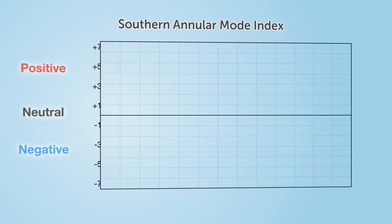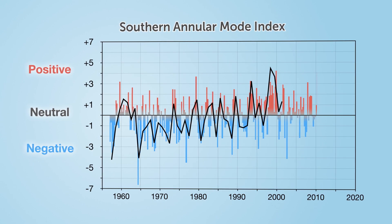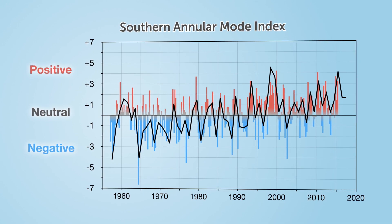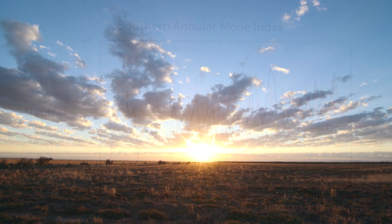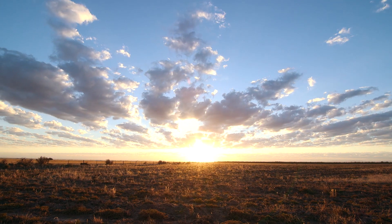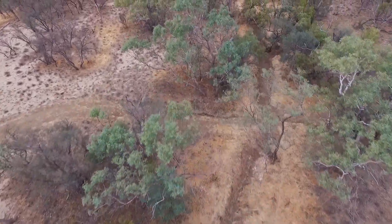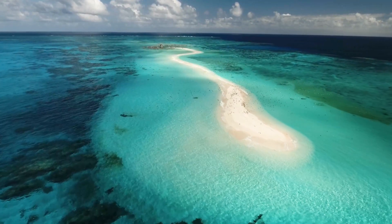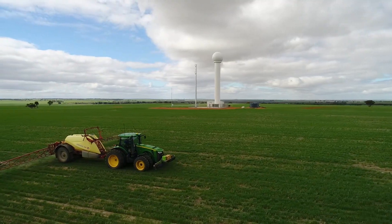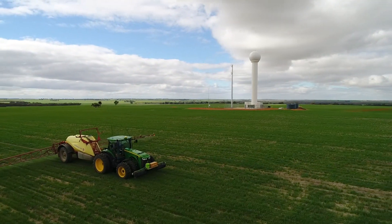In recent decades, there has been a trend towards more positive SAM events and our weather systems have shifted southwards. The Southern Annular Mode plays an important role in driving Australia's climate. As with all our climate drivers, no two SAM events and no two sets of impacts are exactly the same. Understanding this key Australian climate driver can help you better understand our seasonal outlooks and make smarter climate decisions.